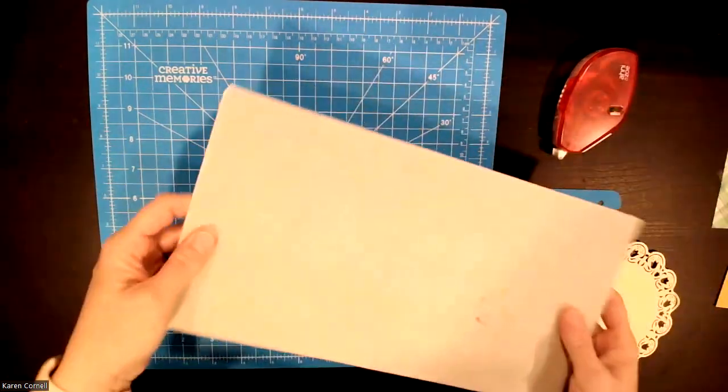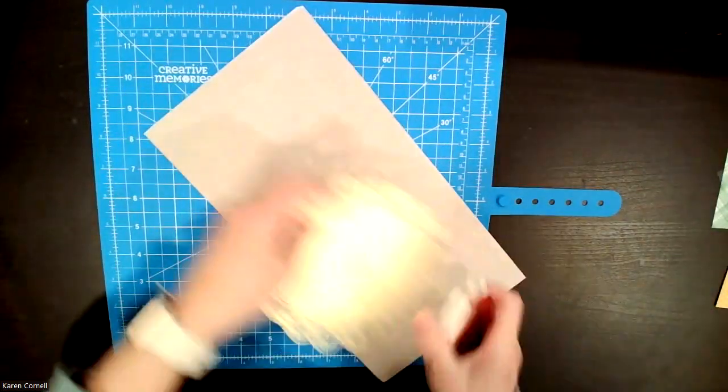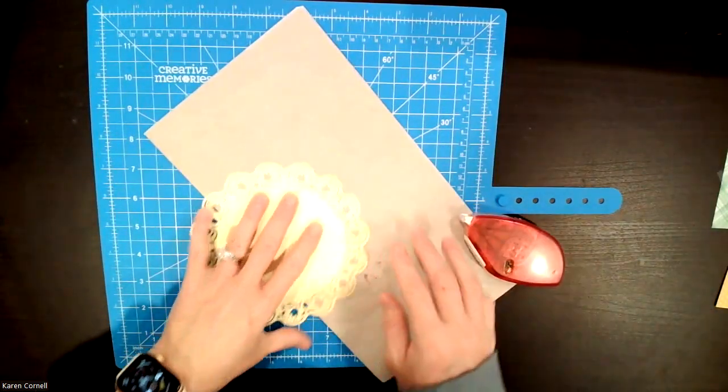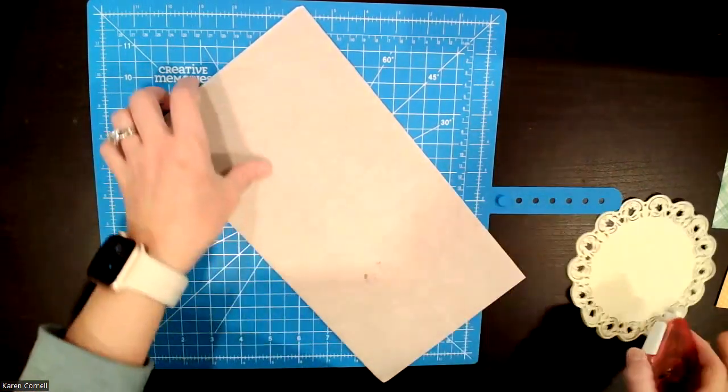You know how I had you guys all make these little mats for your repositionable, so that when you do something it doesn't stick to your mat, so you don't use your cutting mat. We made these out of parchment paper and cardboard.